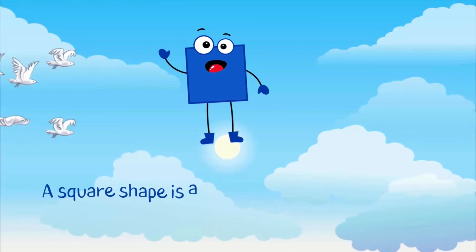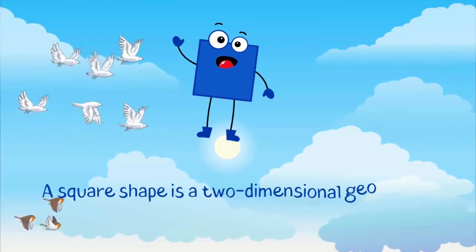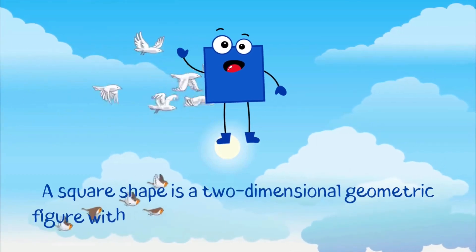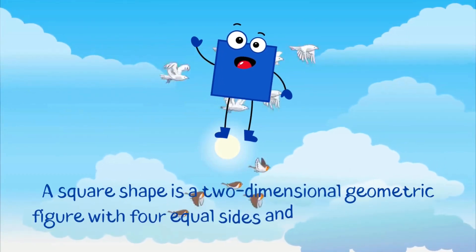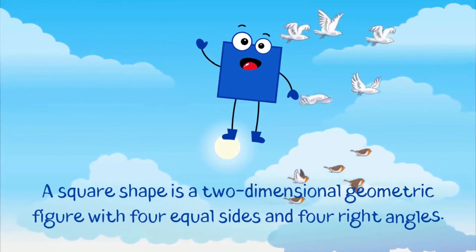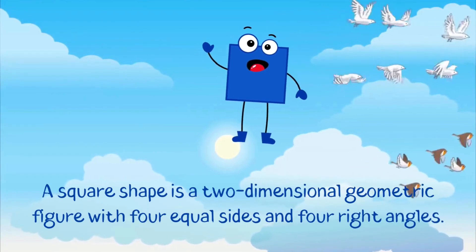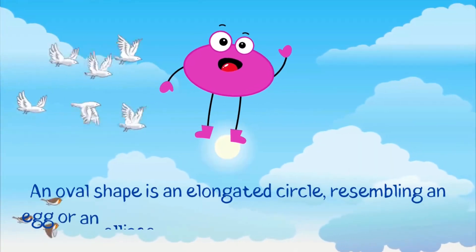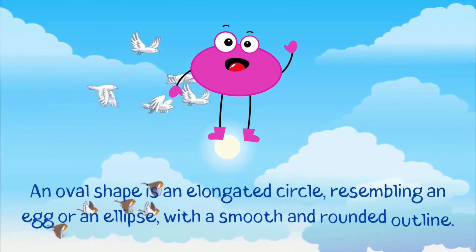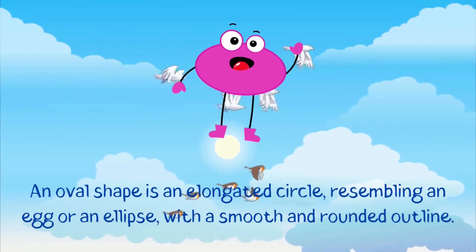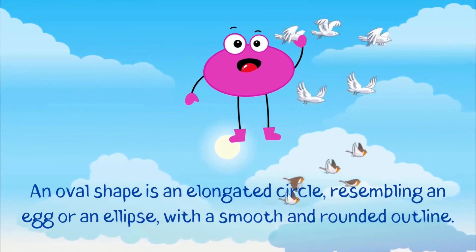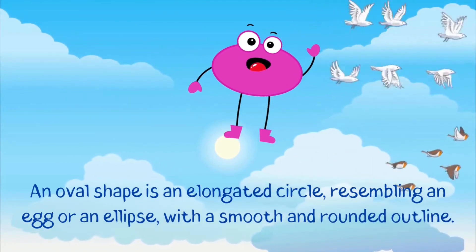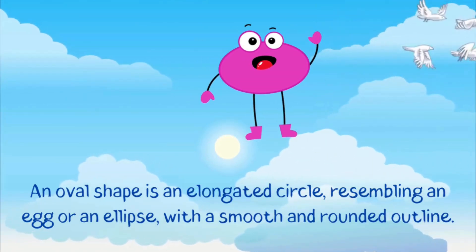A square shape is a two-dimensional geometric figure with four equal sides and four right angles. An oval shape is an elongated circle, resembling an egg or an ellipse with a smooth and rounded outline.